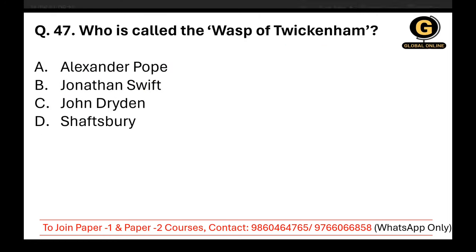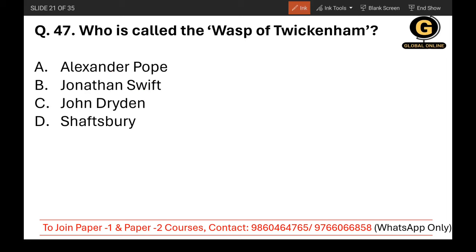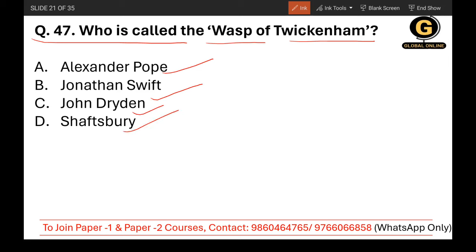Question 47: Who is called the Wasp of Twickenham? The options are Alexander Pope, Jonathan Swift, John Dryden, and Salisbury. The correct answer is Alexander Pope.